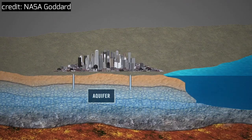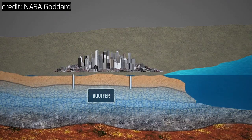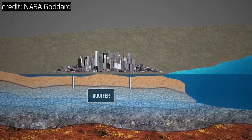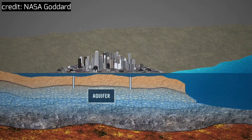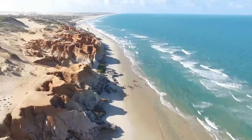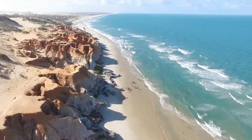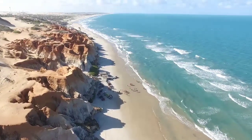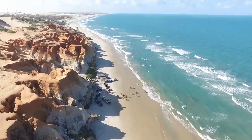However, when water is extracted, it causes sediment to compact and the ground above to subside. This leads to additional sea level rise in these areas.